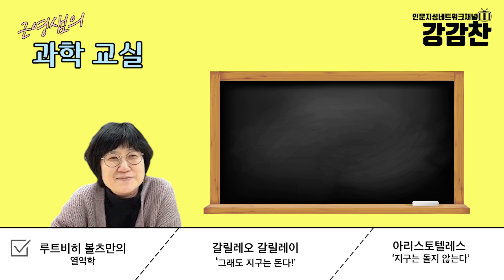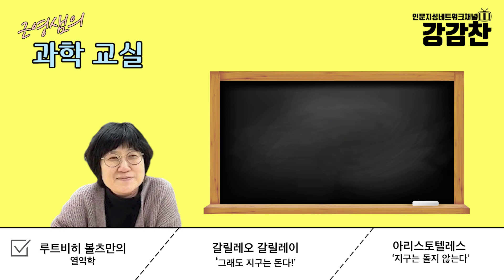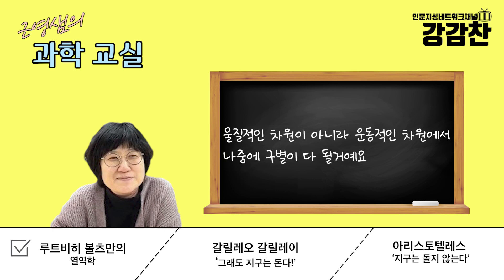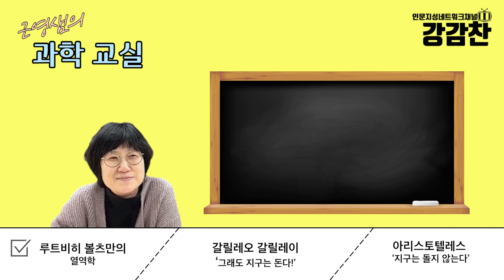근대과학이 탄생했다고 얘기할 때 기억하실 게 바로 이 변화, 물질의 세계에서 운동의 세계로 바뀌었다는 거예요. 원자, 전자 이런 말을 생각해보면, 우주 전체에 있는 모든 전자는 다 똑같아요. 지구의 전자와 안드로메다의 전자는 동일한 모습을 하고 있어서 구별이 안 됩니다. 그런데 얘네들을 구별할 수 있는 건 물질적 차원이 아니라 운동적 차원에서입니다. 운동 방식만 다른 거예요.